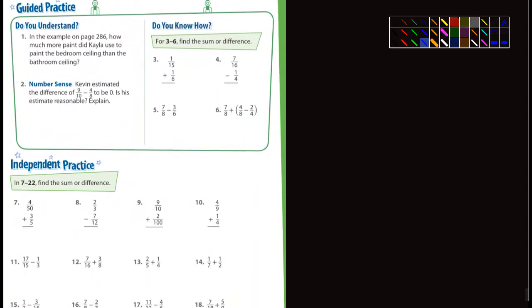Okay, let's see here. Let's go to the next page, the guided practice. Let's take a look. In the example on page 286, how much more paint did Kaylee use to paint the bedroom ceiling than the bathroom ceiling? So you're gonna have to subtract one from the other. And I'm not gonna do that one for you. I'll let you guys figure that one out. Number two, Kevin estimated the difference of nine-tenths subtracting four-eighths is to be zero. Is his estimate reasonable? Explain. No, not really, because I'm thinking nine-tenths, that's pretty close to one. Four-eighths? Well, what is four-eighths? That's a half. So a half would be a much better estimate.